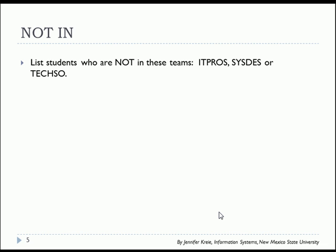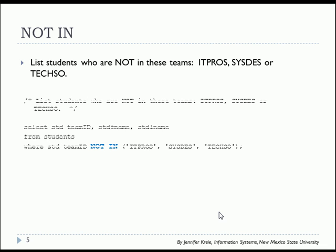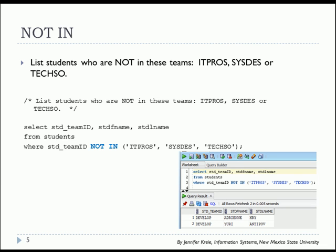We can also quickly modify that and say list students who are not in these teams — you can just add the word NOT; it can't get any easier than that. So we have WHERE student team ID NOT IN, and then we've listed the three values that we are checking for.